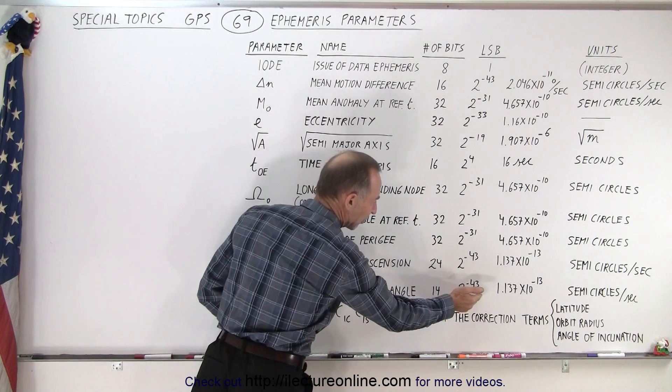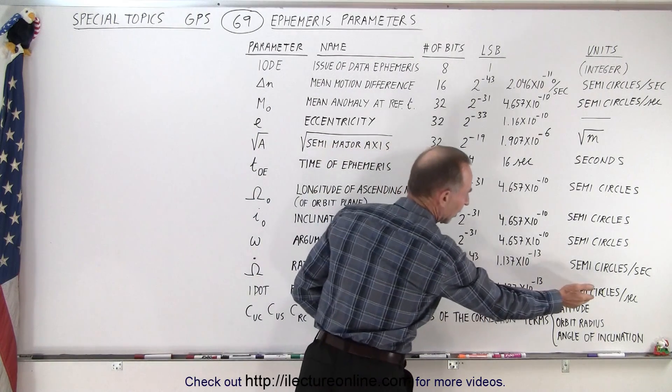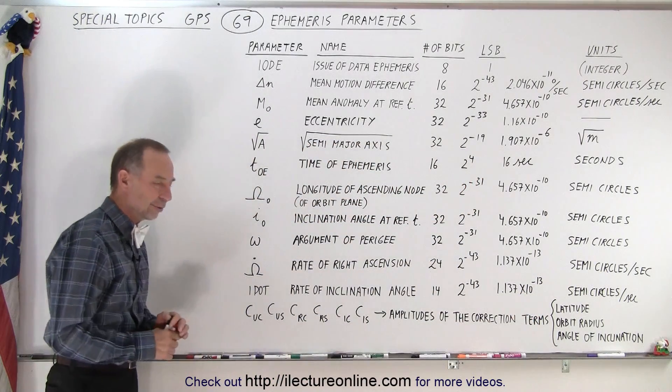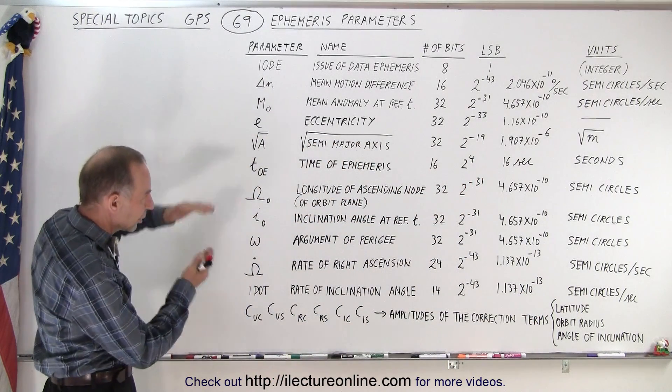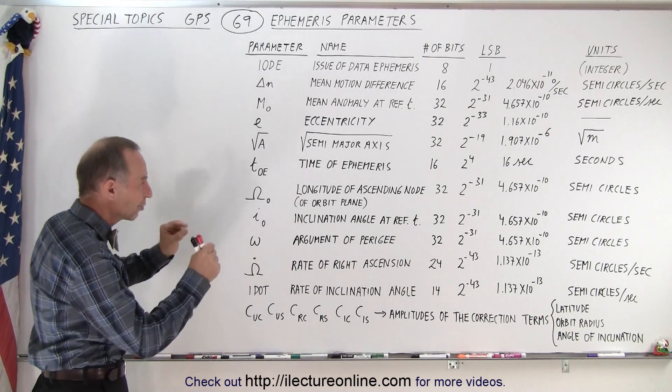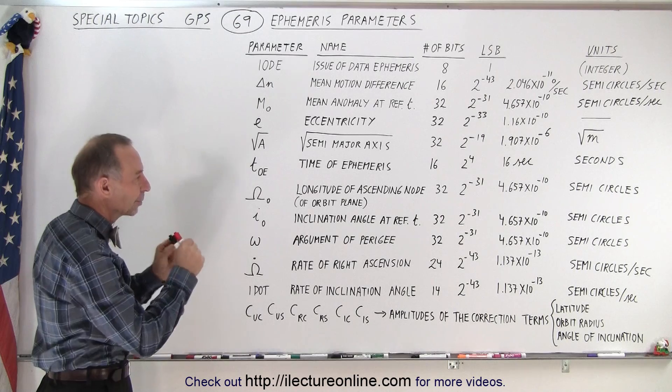We want to be able to keep track of it again at very, very tiny, minute numbers in semicircles per second. Very, very tiny difference. So as you can see, when you look at this table, all the parameters are precise, to very minute little numbers. That is being kept track of.